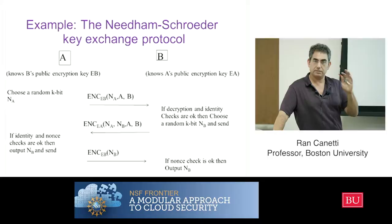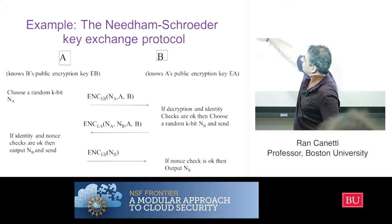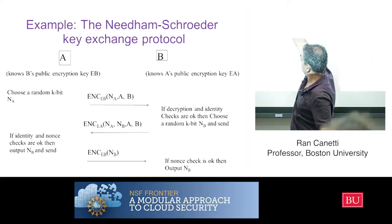Assume the encryption scheme is CCA-secure if you're a cryptographer, or ideally a black-box if you prefer. The parties know each other's public keys. Party A chooses a random k-bit nonce, and encrypts this nonce along with A's identity and B's identity under B's public key.